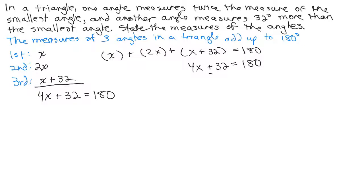Now we're going to solve for X, so we need to subtract 32 from both sides, which will give us 148, and divide by 4. And I think that gives us 37.